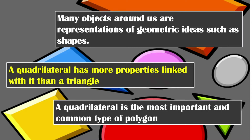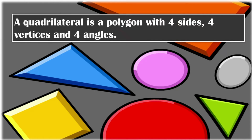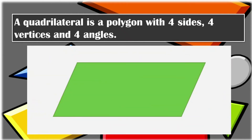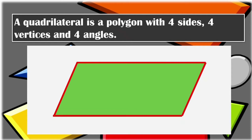A quadrilateral has more properties linked with it than a triangle. A quadrilateral is the most important and common type of polygon. A quadrilateral is a polygon with four sides, four vertices, and four angles.